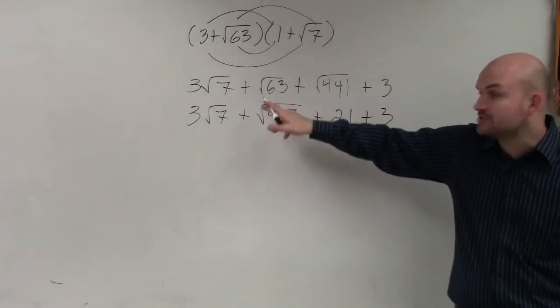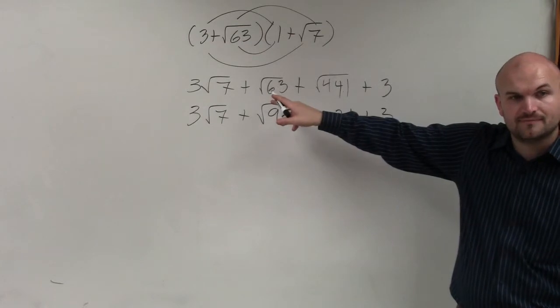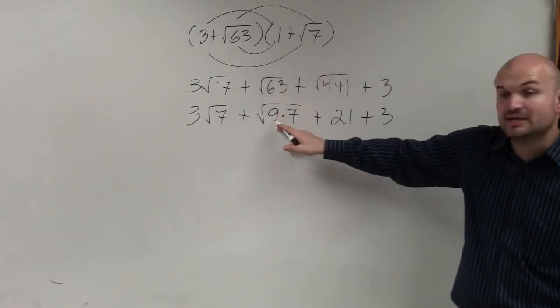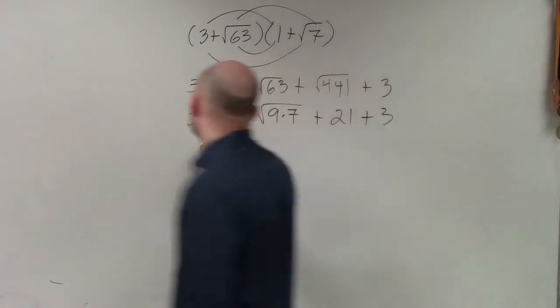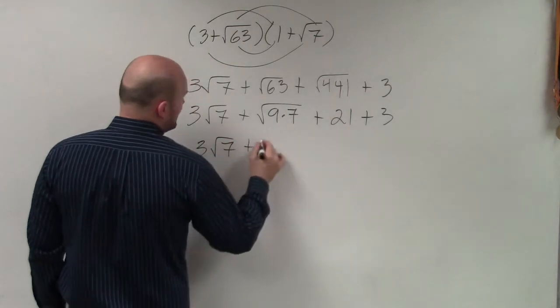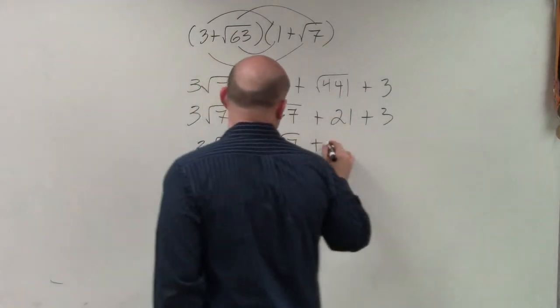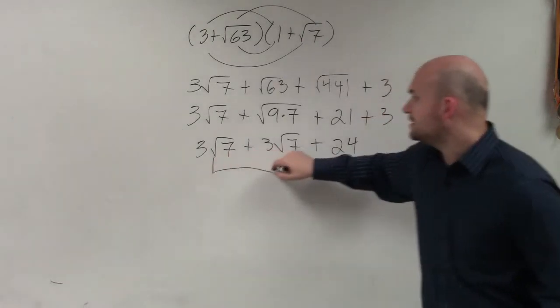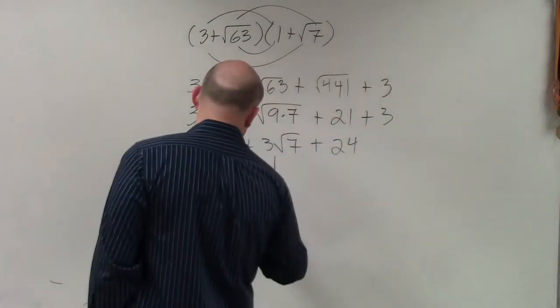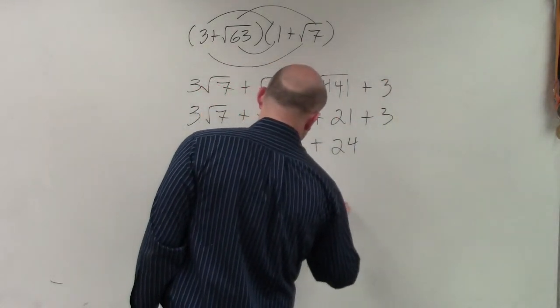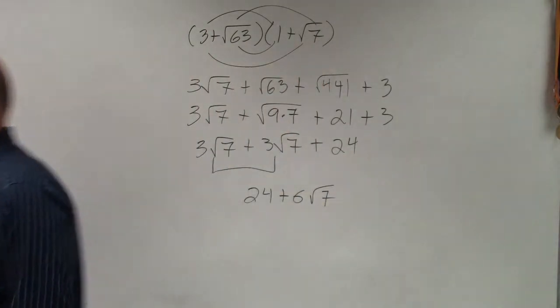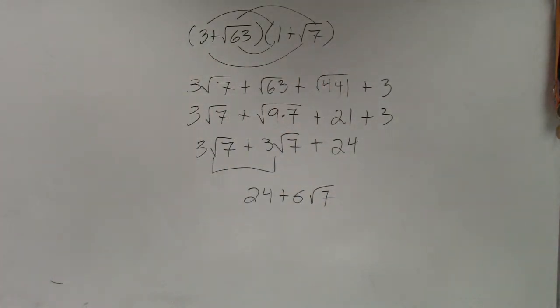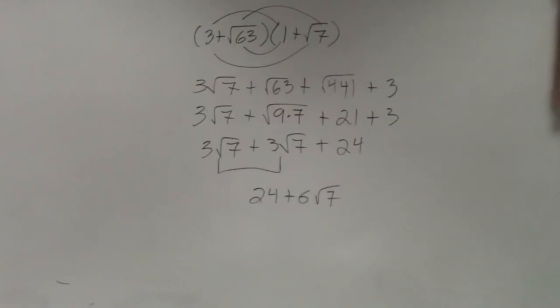Now, since I broke up the square root of 63, Haley, since I broke the square root of 63, can I take the square root of 9? Yes. So I have 3 square root of 7 plus 3 square root of 7 plus 21 plus 3 is 24. I can combine these two to give me 24 plus 6 square root of 7, right?